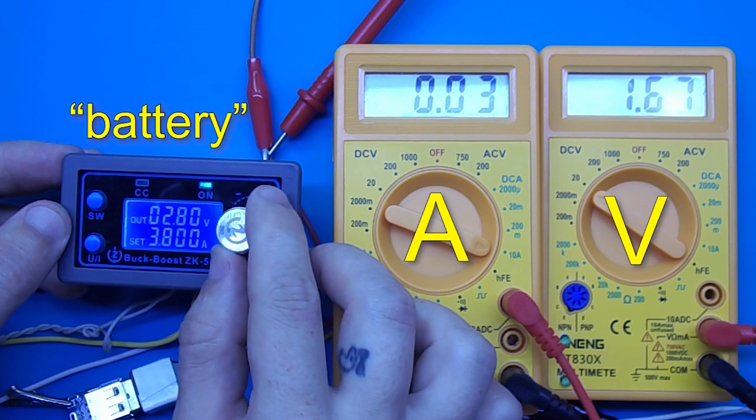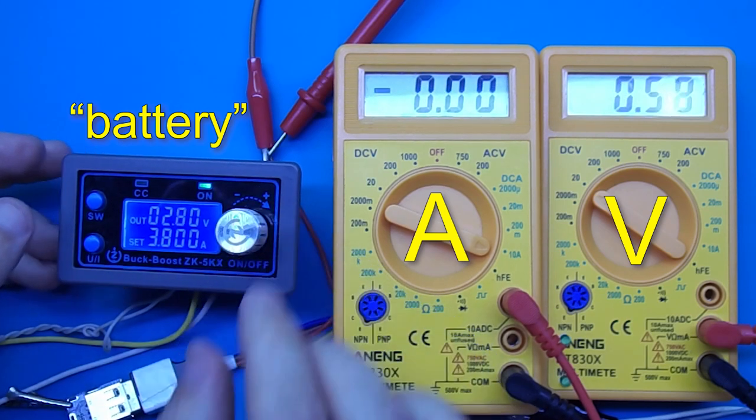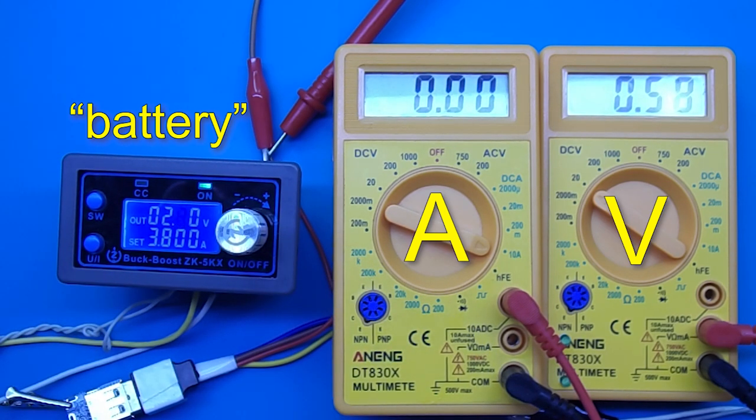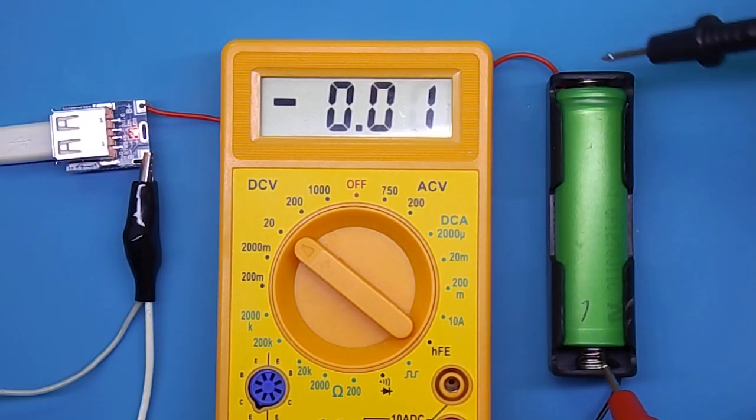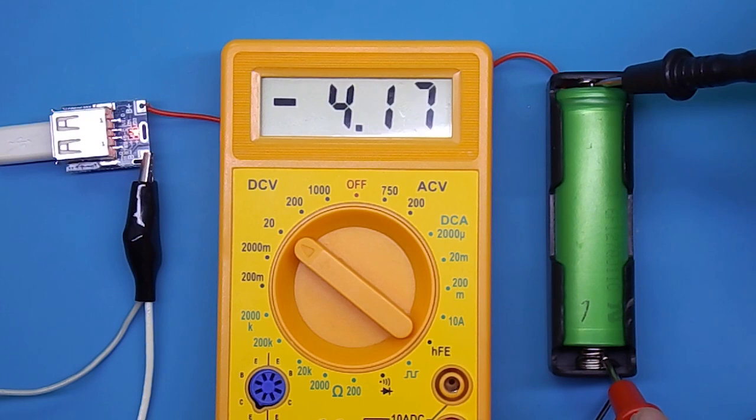After the voltage dropped to 2.8 volts, the converter turned off. The voltage up to which the batteries are charged is 4.17 volts. This is normal voltage for this type of battery.